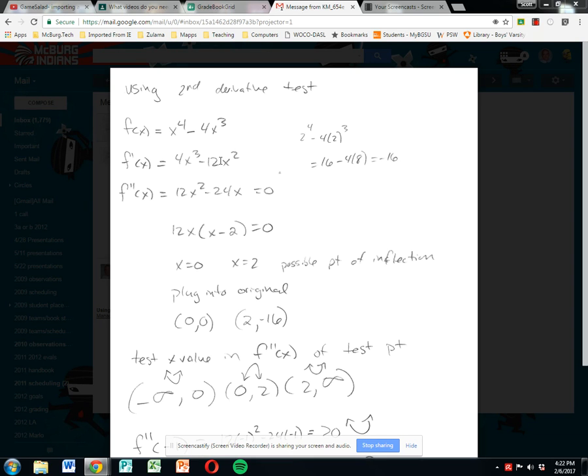If it's a positive double derivative, it's concave up. If it's a negative double derivative, it's concave down. So let's look at a specific problem.